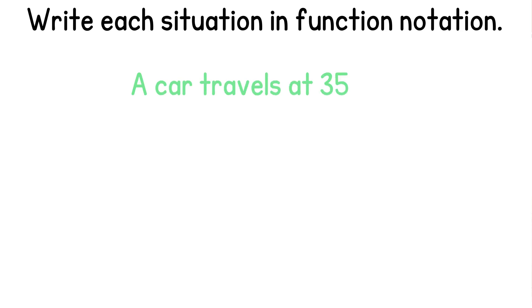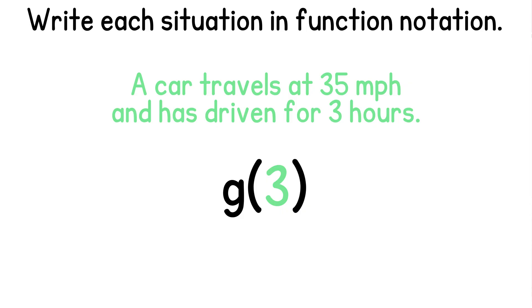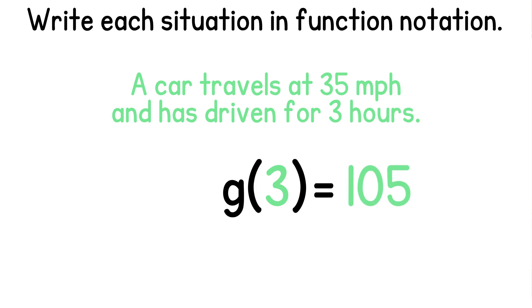Now we have that a car travels at thirty-five miles per hour and has driven for three hours. This time we'll use g of x as function notation — the letter f doesn't always have to be used; we can use any variable we choose. We know that the car has driven for three hours, so our input x becomes three. The car travels at thirty-five miles per hour, so we multiply three hours by thirty-five miles per hour, which gives us an output of 105 miles.